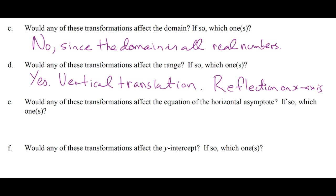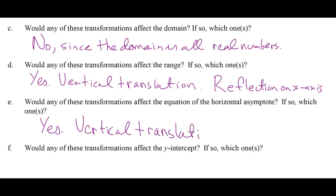Would any of these transformations affect the equation of the horizontal asymptote? What's going to affect it? A reflection? No — it would still be zero. A vertical translation will affect it. If I move the whole thing up three units, your new horizontal asymptote will be y equals 3. So yes, only a vertical translation.